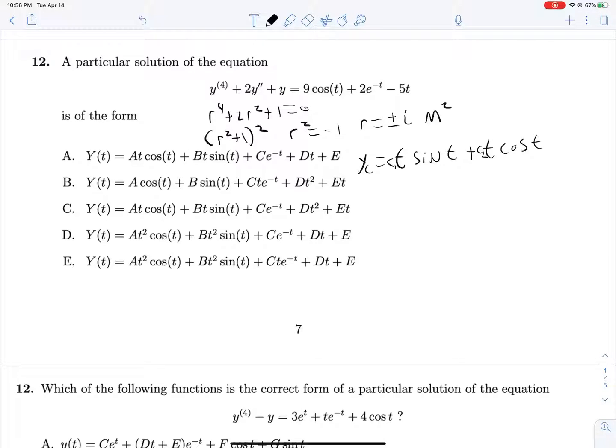And remember that that extra T that we're multiplying into everything is a result of this multiplicity here. So now taking a look at what we would like our guess to be given what we have here, we would like our guess for Y particular to be A cosine T plus B sine T plus Ce to the negative T plus DT plus E because remember whenever we have some T to the n we have to split that up.